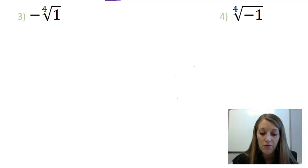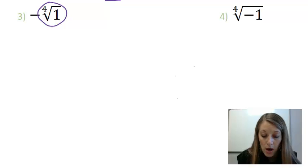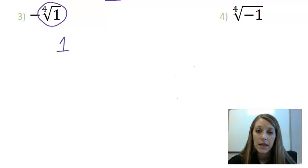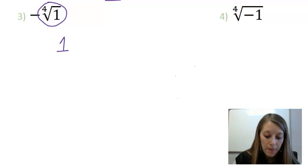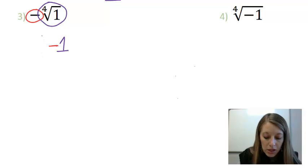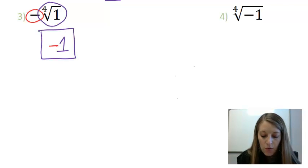I have the fourth root of one. Well, any root of one will always simplify to be one, because one to any power is always itself. So, the fourth root of one is one, and then this negative on the outside, it just carries down from step to step. So, my answer to this problem is negative one.